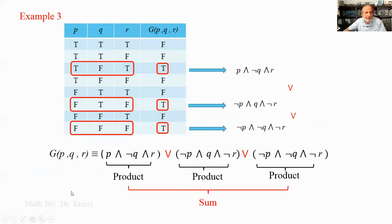A third example: I have a function with values F, F, T, F, F, T, F, T. Looking at each true row: the first T gives P AND NOT Q AND R; the second T gives NOT P AND Q AND NOT R; and the third T gives NOT P AND NOT Q AND NOT R.